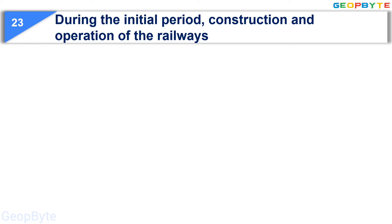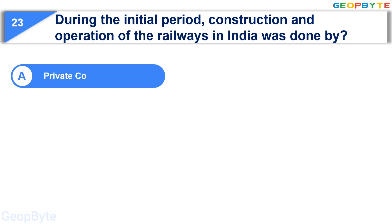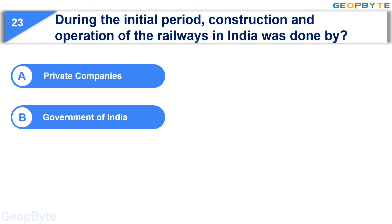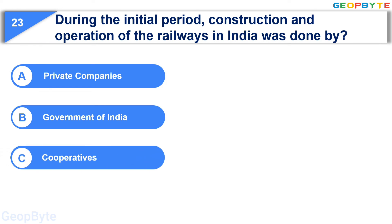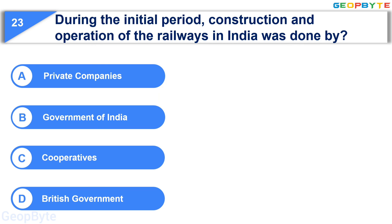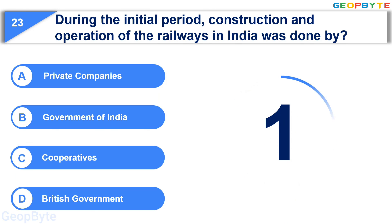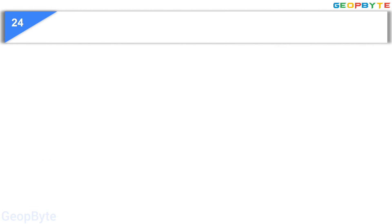Moving to the twenty-third question: during the initial period, construction and operation of the railways in India was done by — Option A: Private Companies, Option B: Government of India, Option C: Co-operatives, Option D: British Government. Your time starts now. Your time is up and the correct answer is Option A: Private Companies.